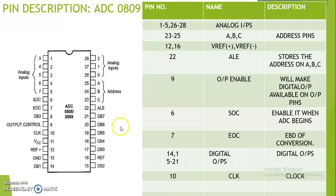Pin number 9 is the Output Enable pin. When activated, the Output Enable pin will make the digital output available on the output pins. Pin number 6 is SOC, which is the Start of Conversion input. When we enable this start input, it begins the A-to-D conversion. A pulse must be given on the start pin to begin the conversion.